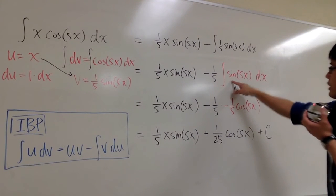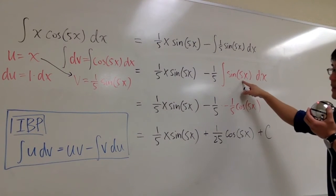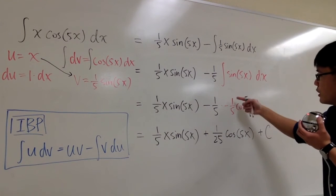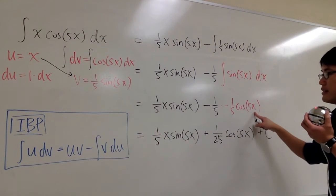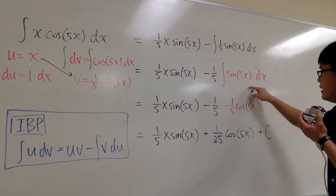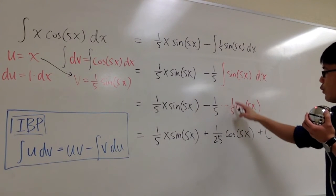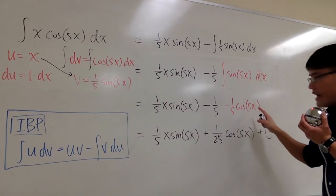Integral of sine will give you negative cosine. But then, inside here, you have 5x. So you multiply by 1/5, and you keep the 5x the same. So, the integral of this is negative 1/5 cosine 5x.